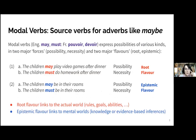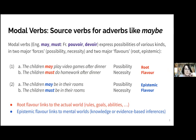Modal verbs like English 'may' or 'must', or French 'pouvoir' and 'devoir', express possibilities of various kinds. They do so in two major forces: weaker possibility and stronger necessity. They also operate in two different flavors: root modality and epistemic modality. Consider 'the children may play video games after dinner' or 'the children must do homework after dinner' — the most natural interpretation is that children are allowed to or are obliged to do whatever is in the predicate. Root modal flavors link to the actual world, dealing with rules, abilities, or goals.